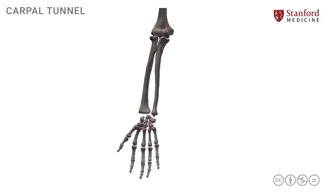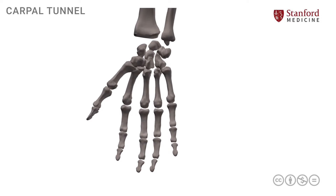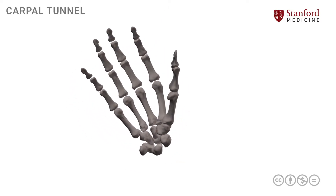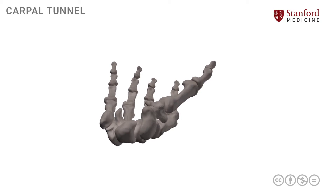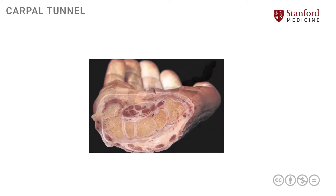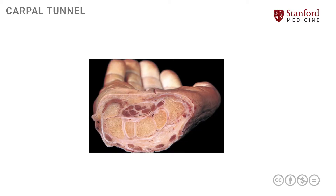In order to understand the carpal tunnel, let's start by looking at the forearm, wrist, and hand area in its anatomical position. We will now rotate it around and look at a very peculiar view like this. And if you take a transverse section at this level in this vantage point, you end up with an image that looks like this.